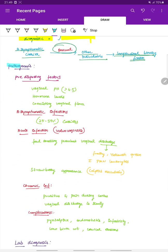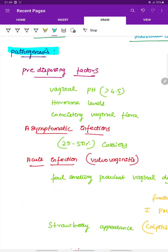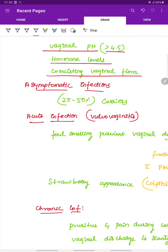Pathogenesis of Trichomonas vaginalis. Predisposing factors are vaginal pH more than 4.5, hormonal levels and coexisting vaginal flora. Asymptomatic infections: 25 to 50 percent are carriers.